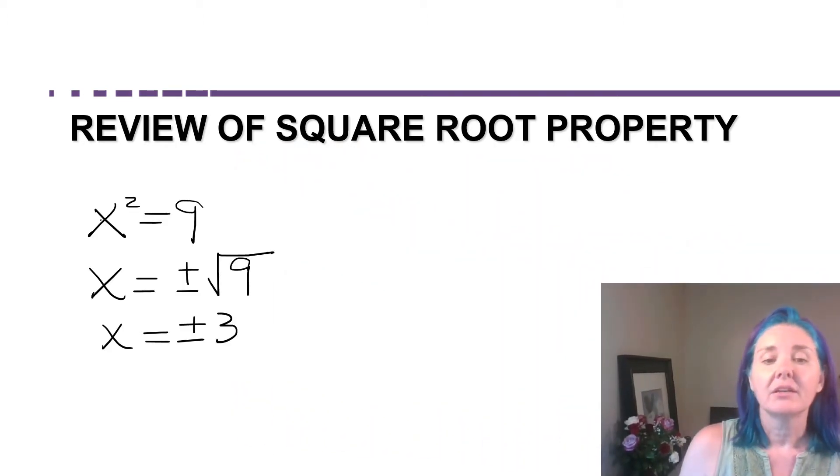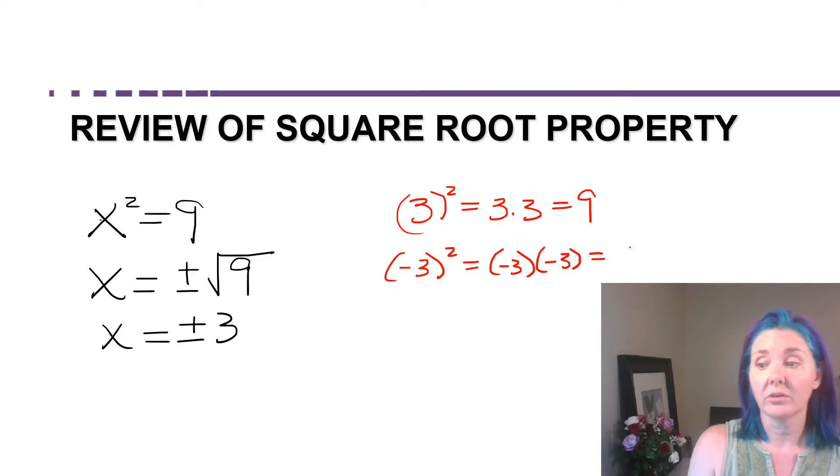For example, if we have x squared equals 9, the square root property tells us that x is either the positive or negative square root of 9. So x would either be plus or minus 3. 3 squared just means 3 times 3, which is equal to 9. And negative 3 squared equals negative 3 times negative 3, which is also equal to 9. So there are always two possible answers when you have a variable squared equal to a number.